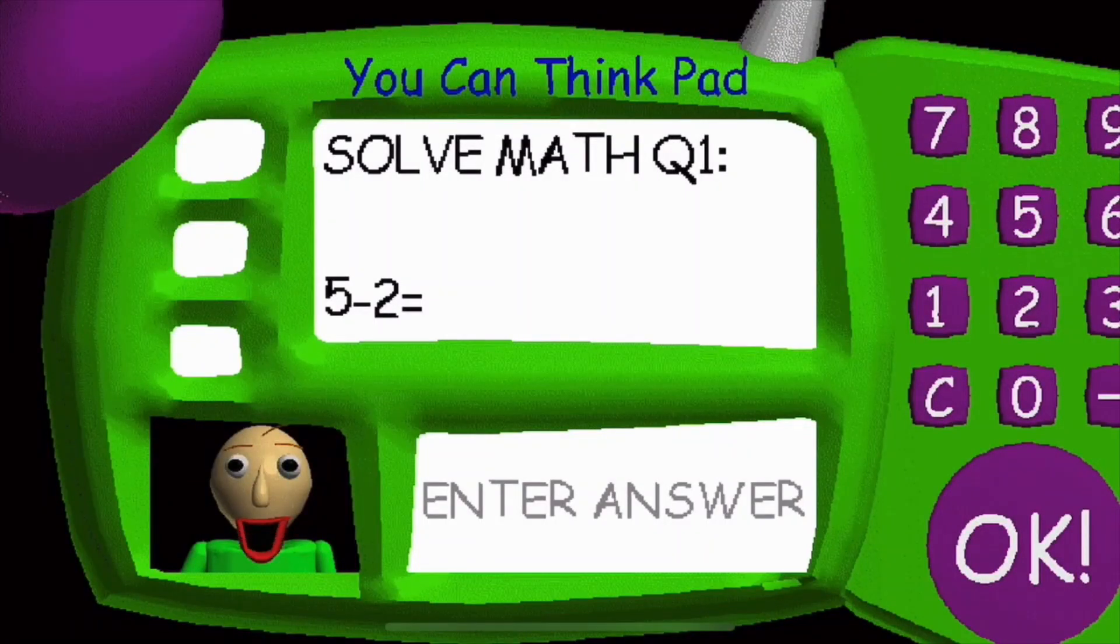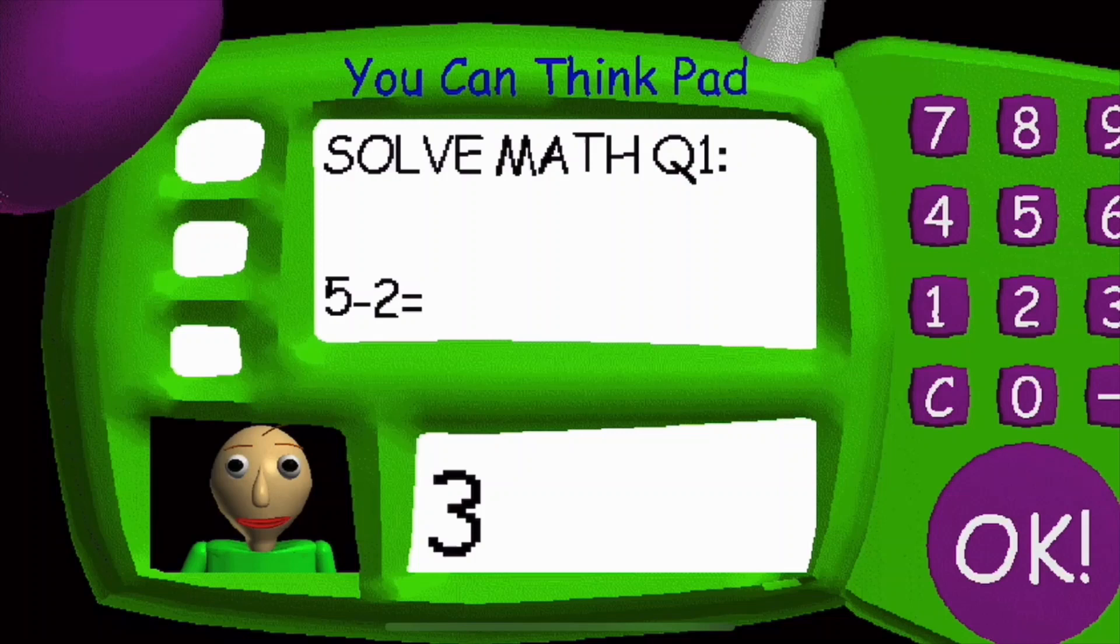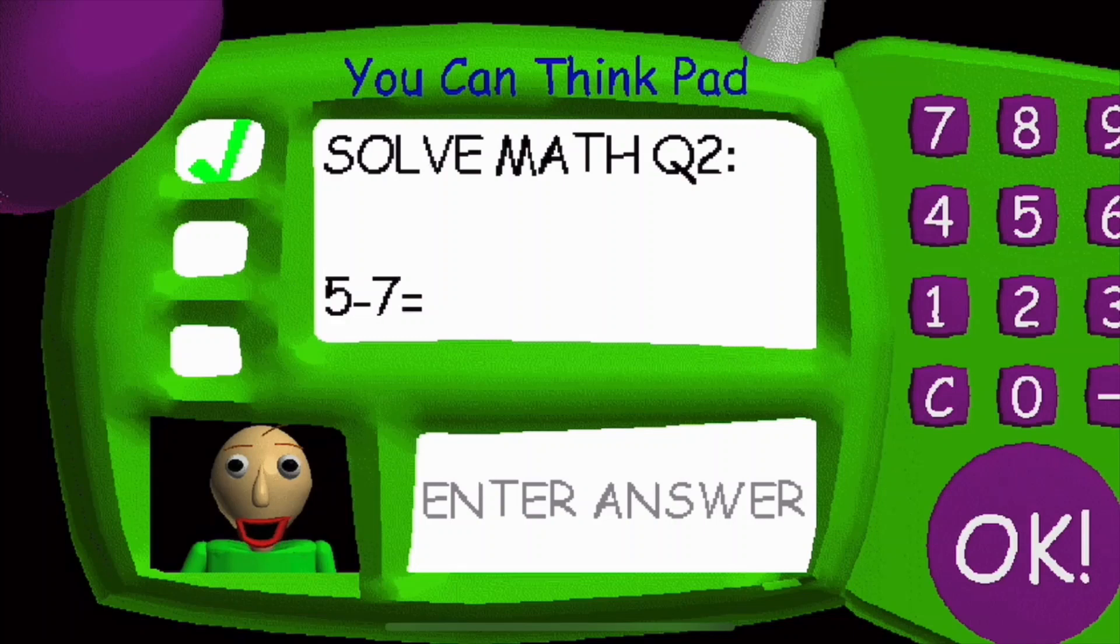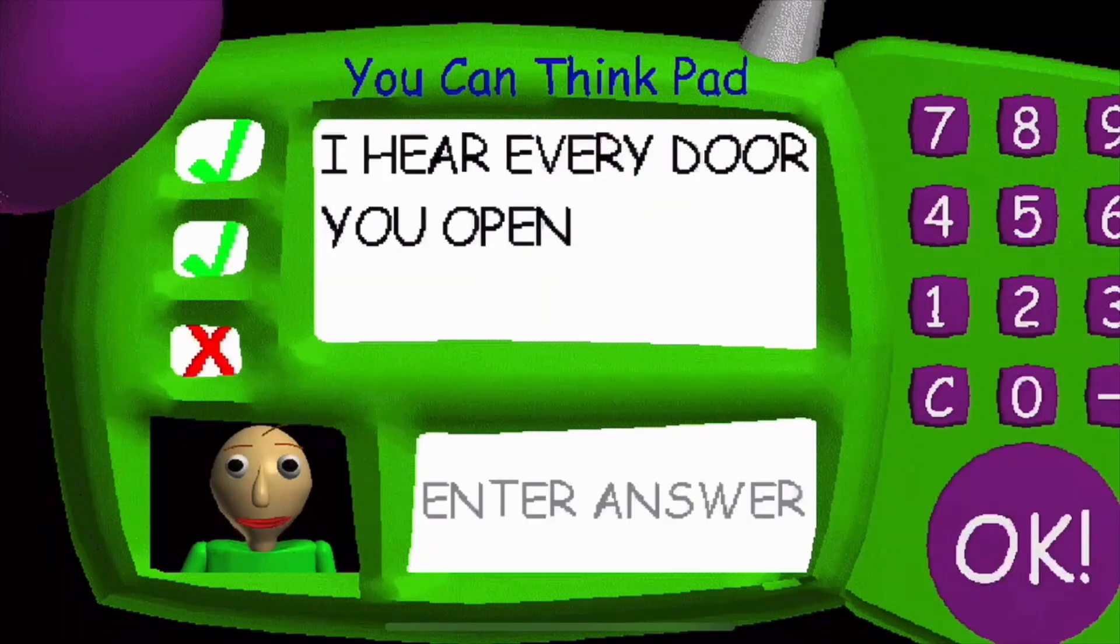Problem one. Five. Minus. Two. Equals. Good one. Problem two. Five. Minus. Seven. Equals. You're doing fan- Alright.